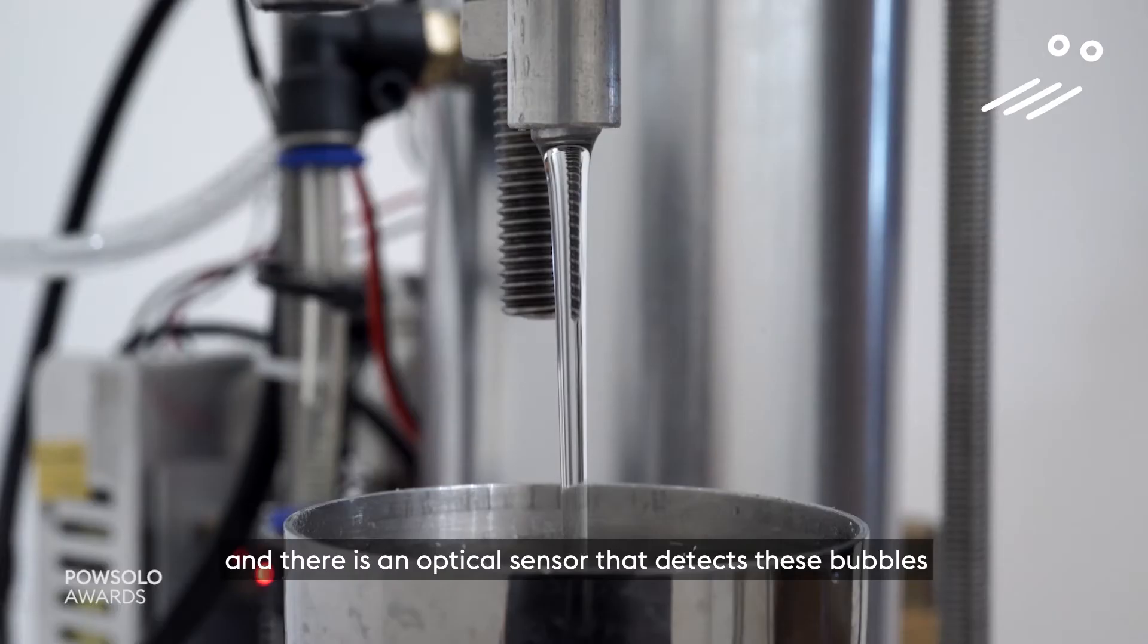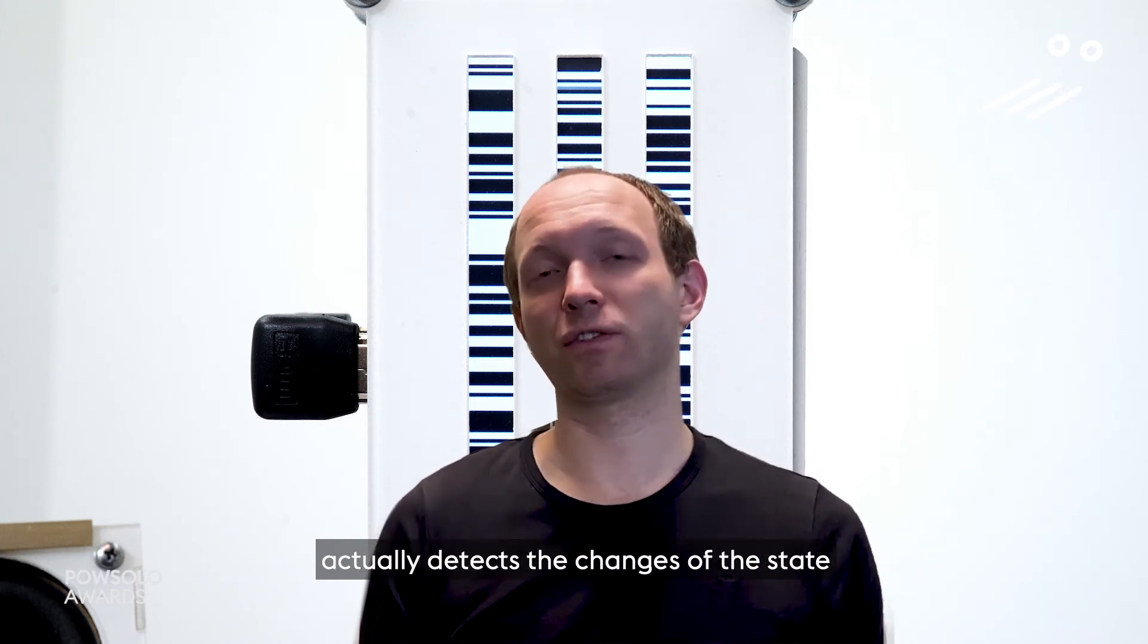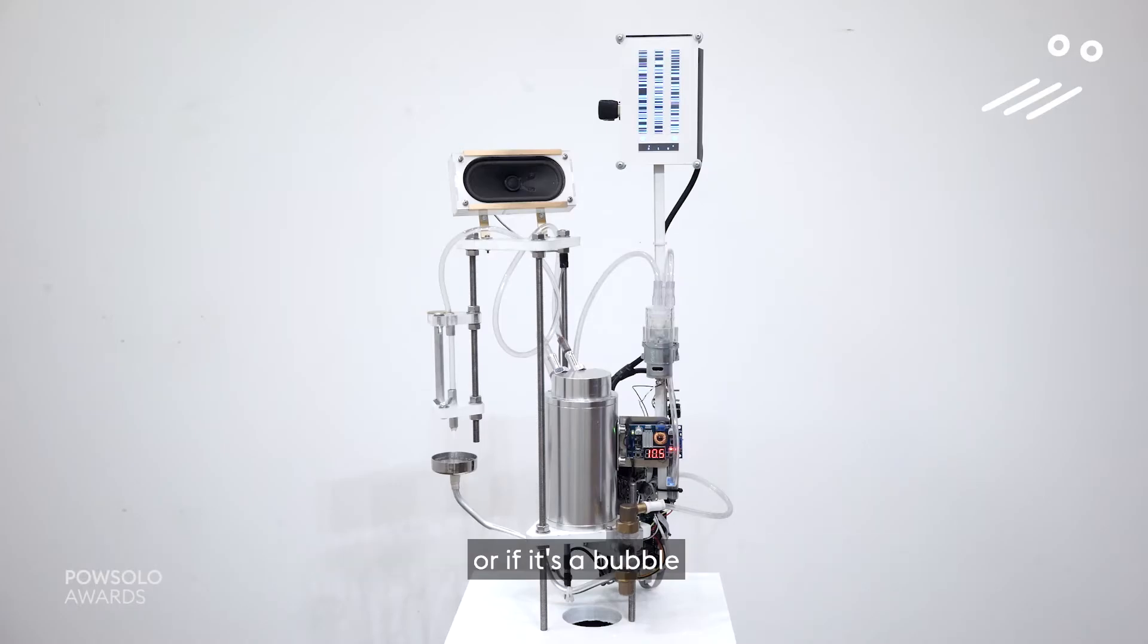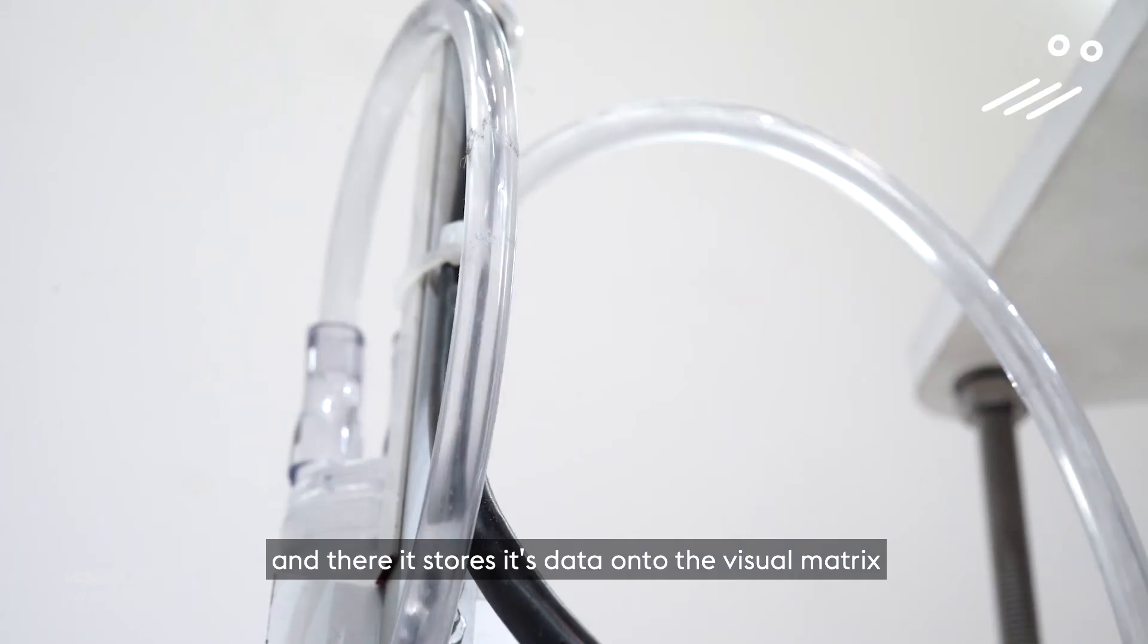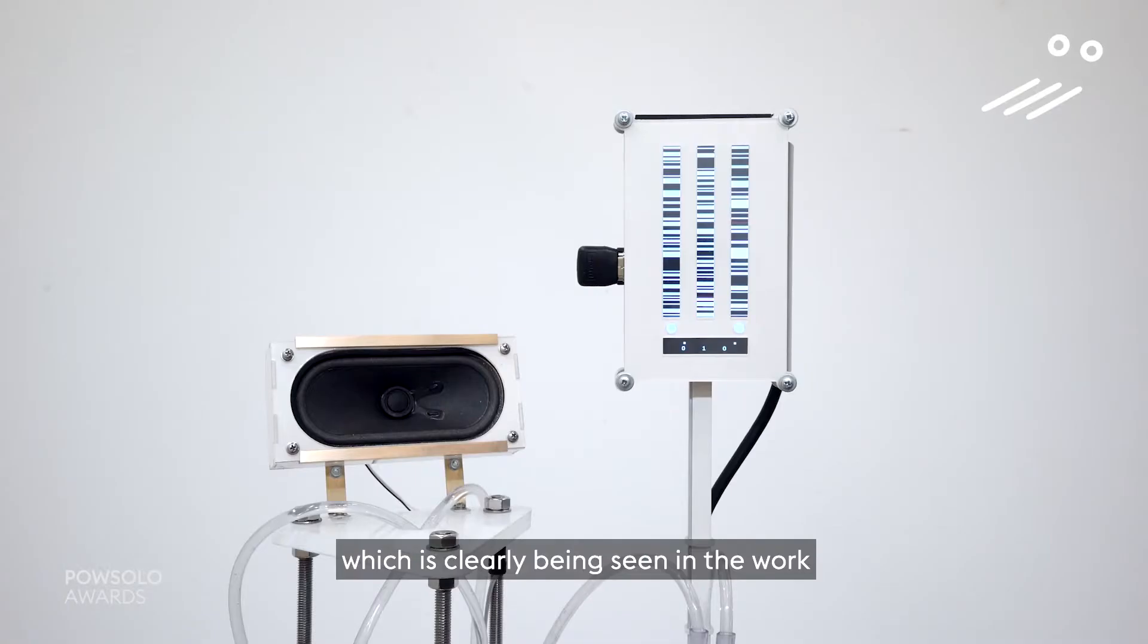There is an optical sensor that detects these bubbles, actually detects the changes of state—if it's water in the current moment inside the pipe or if it's a bubble. Then it stores this data into the visual matrix, which is clearly seen in the work.